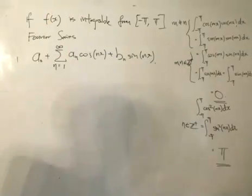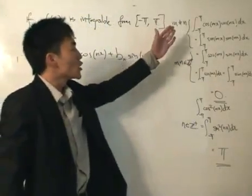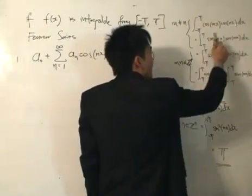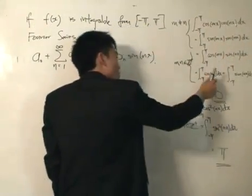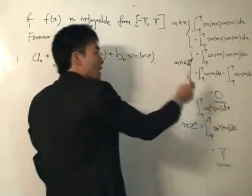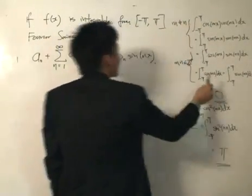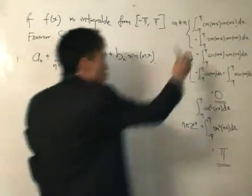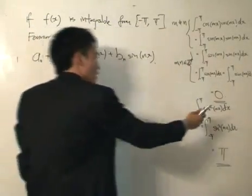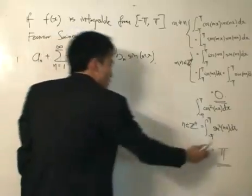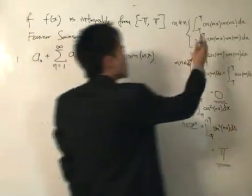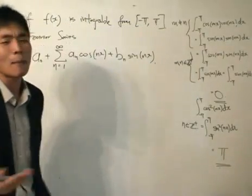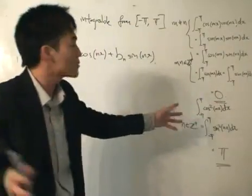On the right side we have integration formulas. I don't want to go much into the derivation, but note the following: integrating cosine times sine, or sine times cosine from minus pi to pi is equal to zero. Also, integrating cosine squared or sine squared from minus pi to pi is equal to pi. Briefly, substituting limits gives us things like sine(nπ) equals zero, which is how we get zero in those cases.